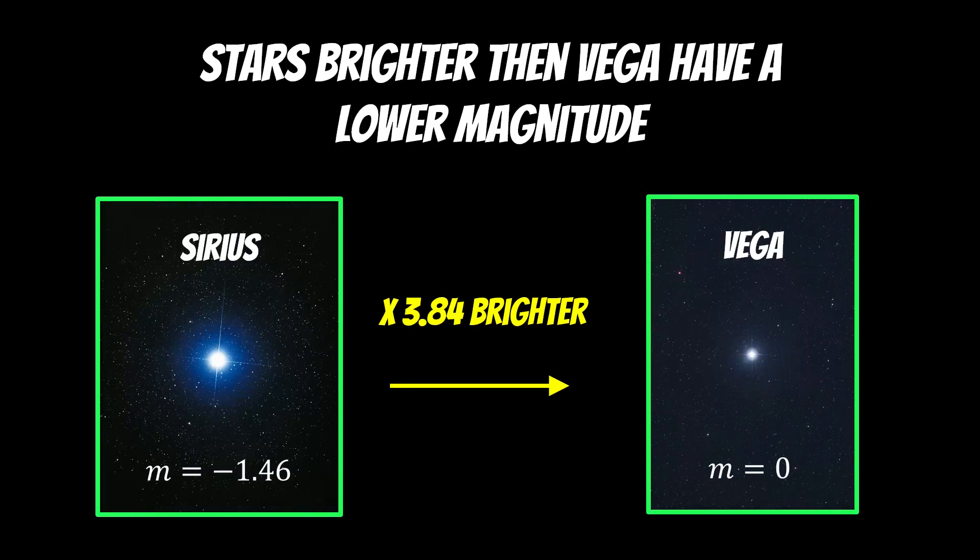Now Sirius is a bright star, and it has an apparent magnitude of minus 1.46. So in comparison to Vega, which has this apparent magnitude of zero, it's just under four times brighter. So this is basically how it works, just to give you an idea of what the apparent magnitude means.